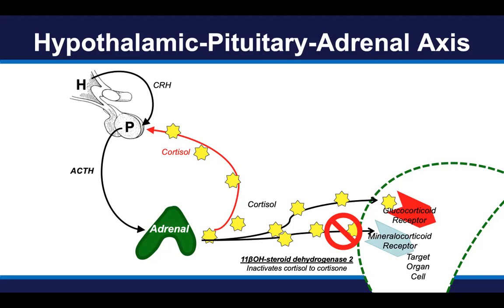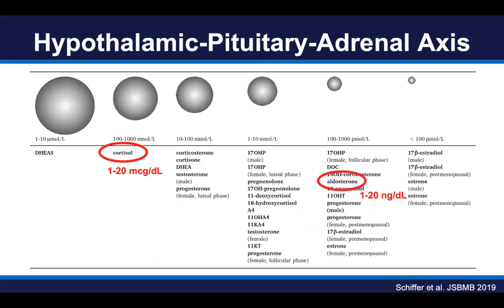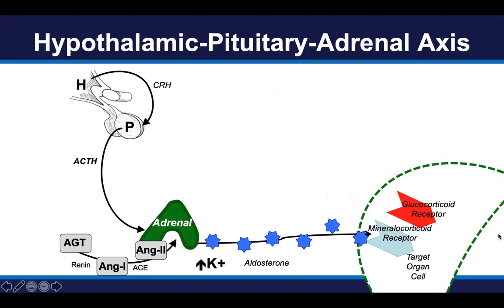This is important because, as you can see in this cartoon, cortisol is one of the most abundant circulating steroids in our blood. In contrast, aldosterone circulates many fold lower than cortisol — in fact, about 100 to 1,000 fold lower in the circulation. But because most of the cortisol is inactivated in the kidney, aldosterone can retain a high affinity relationship with the mineralocorticoid receptor in the kidney, even though its circulating concentration is much lower.